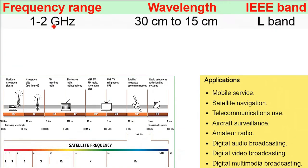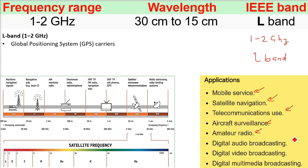Then this is the IEEE bands now. Starting from 1 to 2 gigahertz, 1 to 2 gigahertz is 30 centimeter to 15 centimeter, that is L band. What are the functions? The L band includes mobile surveys, satellite navigation, telecommunication, news, aircraft surveillance, amateur radio, digital audio, video broadcasting, digital multimedia broadcasting.